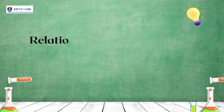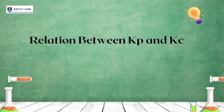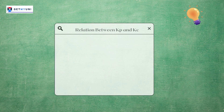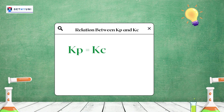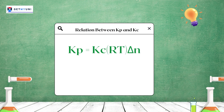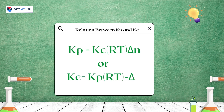Kp and Kc are the equilibrium constants of an ideal gaseous mixture in a reversible reaction. The relation is expressed as Kp = Kc · RT^(Δn), or equivalently Kc = Kp · RT^(−Δn). Kp is the equilibrium constant of pressure and Kc is the equilibrium constant of concentration.